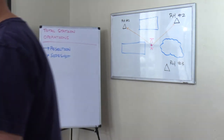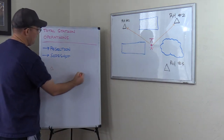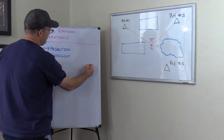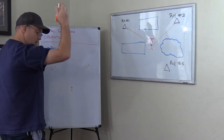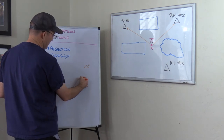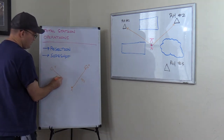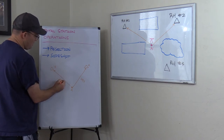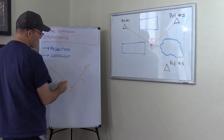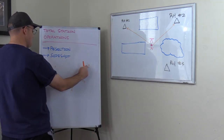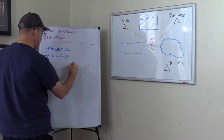Now let's talk about the math that the total station or data collector is actually doing. We've got RH1 over here and RH2 over here. When we set up at A, we're going to measure a vertical angle and a slope distance to point two. The total station converts that into a horizontal distance — we'll call it HD2. It also measures a slope distance and vertical angle to number one and calculates HD1. So we have two horizontal distances. And if we know the two coordinates at RH1 and RH2, we can draw a line between them — we know this distance too, we'll call it HD3.